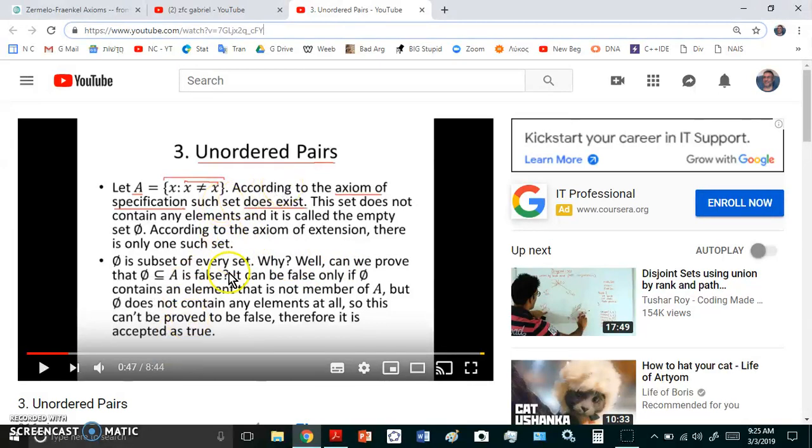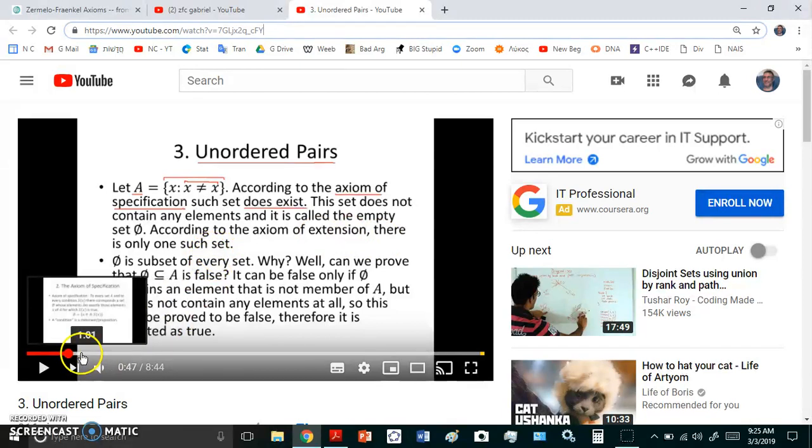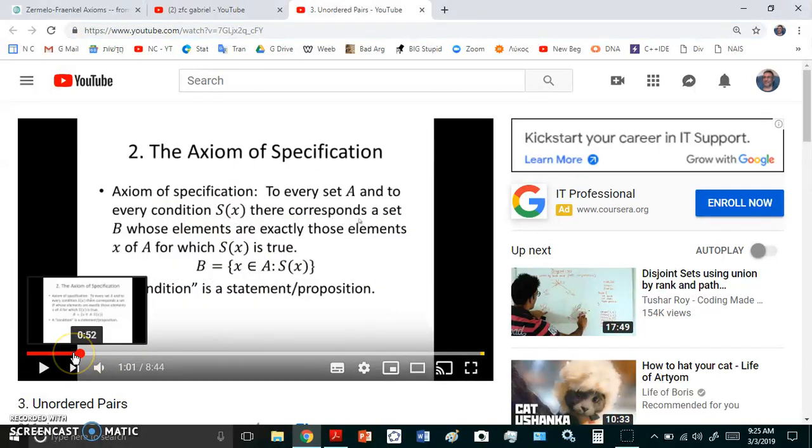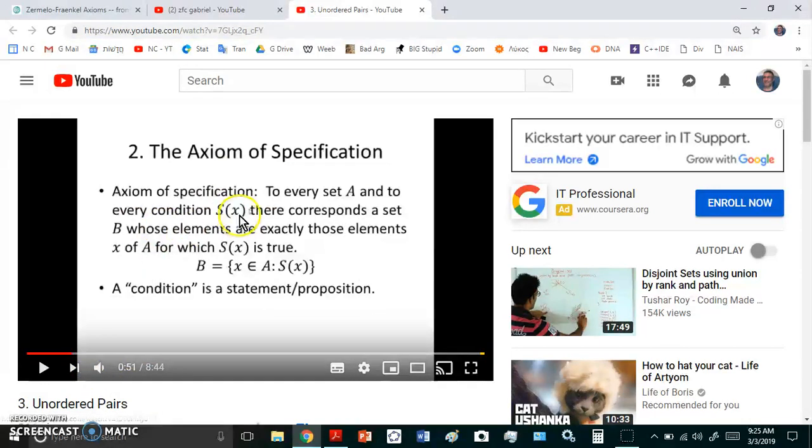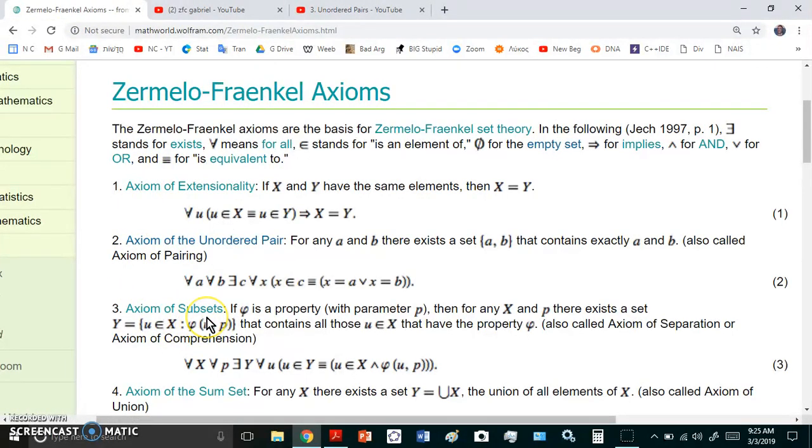This guy here in his video on unordered pairs, he talks a load of crap, but it's kind of funny why he says this set does not contain any elements and it's called the empty set. Then, according to the axiom of extension, which is supposedly the first axiom, there is only one such set. But if you'll notice, when he tries to justify that, he goes to the axiom of specification, which is really this axiom here, the axiom of subsets.